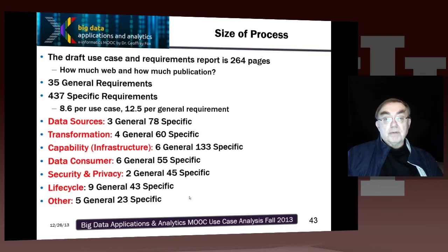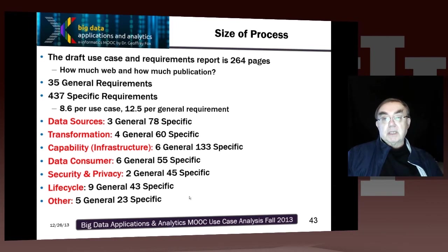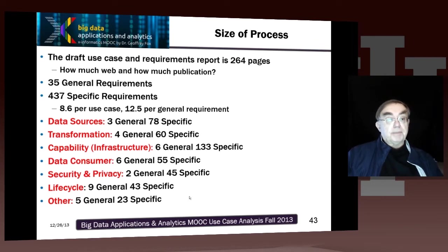Just as an example of how this process is non-trivial in size: if you look at the actual report — which is 264 pages — we have the 35 general requirements and the 437 specific requirements, which averages to 8.6 specific requirements per use case and 12.5 specific requirements per general requirement.